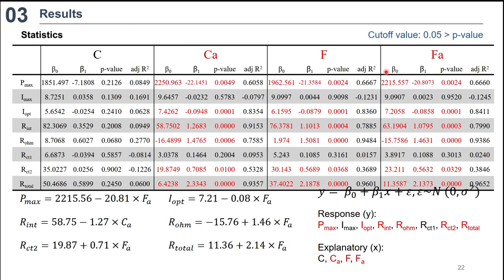We explained the eight full cell responses regarding each explanatory variable. All the statistical data are well summarized in table. Notice the data the full cell responses are well explained by each of three explanatory variables CA, F, FA, respectively. Regarding maximum power density, optimal current density, internal resistance, ohmic resistance, charge transfer resistance 2 and total resistance, the same variables are statistically significant at the same cutoff value of 0.05. This means, for example, if we decrease FA by 1 mm, then we can expect that maximum power density will be increased by 20.81 mW per square meter.